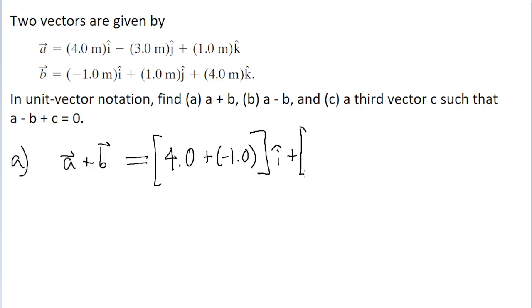Now we'll do the same thing for j. So the j component for vector a is negative three. So negative three plus one meter. And then for k, it's one meter for a and four meters for b. So that's one plus four, and that's our k component.